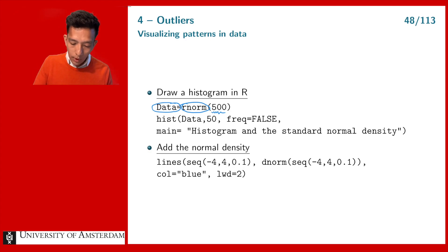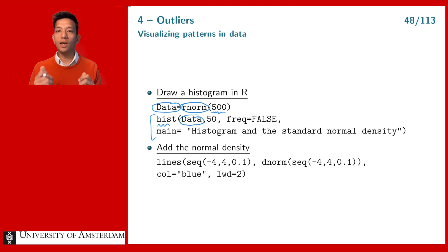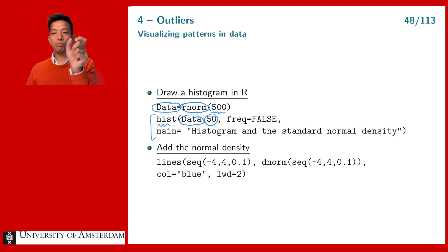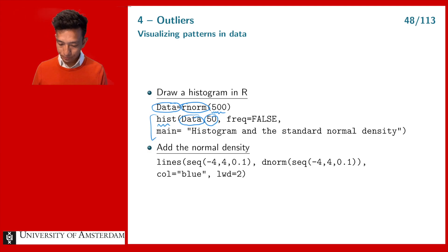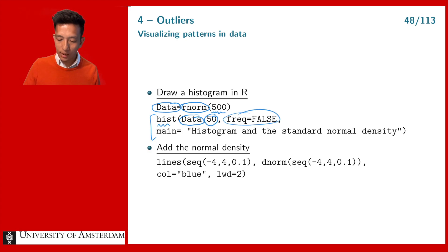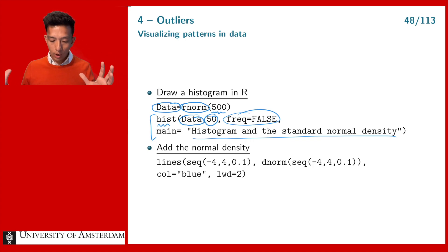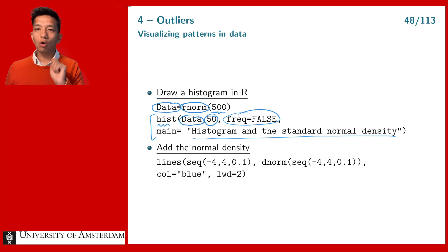What I then do is create a histogram using the function hist. I say make a histogram of the vector 'data' where I take 50 different bins — you can change that number to find the best result. I can make a histogram of density or frequencies; in this case I take density, so I set frequency to false. I also put a title for the histogram, and then on top of that histogram I put the density function of a standard normal distribution.